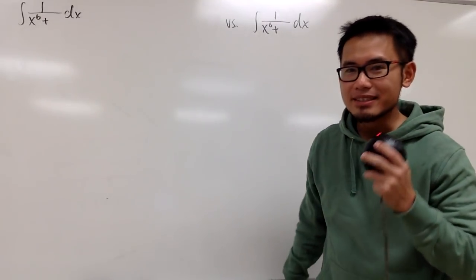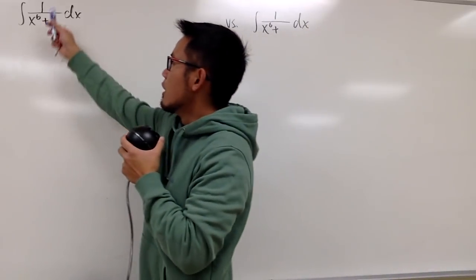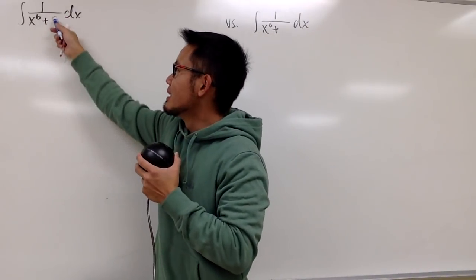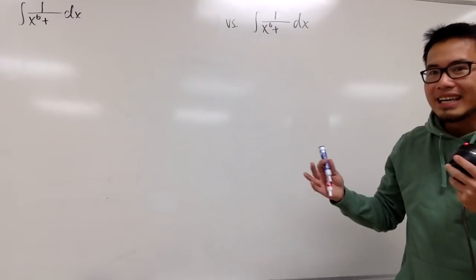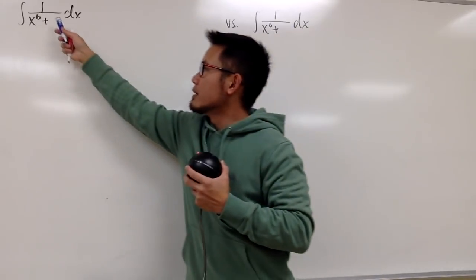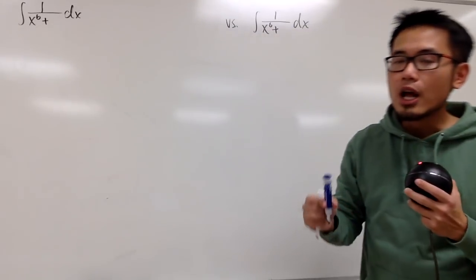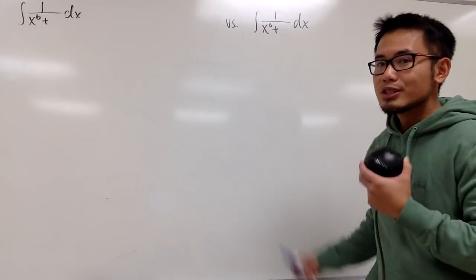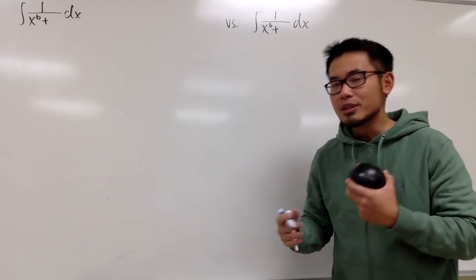We have two integrals on the spot, and this time we are going to create our integrals again. We already have the integrals of 1 over x to the 6th power plus something right here. We don't know yet. So it's just like the last video, but this time we have the empty spot down here. The deal is that we are trying to think about what to add here and there, so that these two integrals will be reasonably doable.